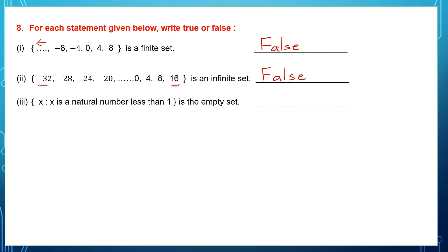Question 3 is in set builder form: x is such that x is a natural number less than 1. Do we have any natural numbers less than 1? We don't. So the statement says this is an empty set, which is true because there are no natural numbers less than 1.